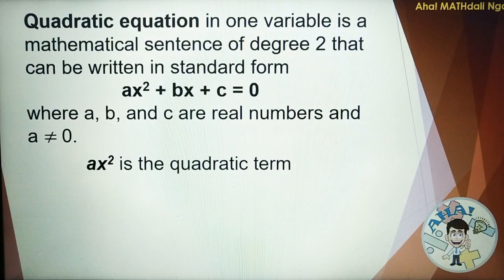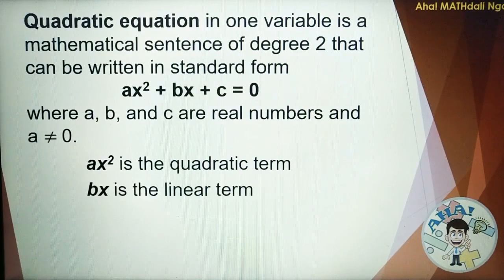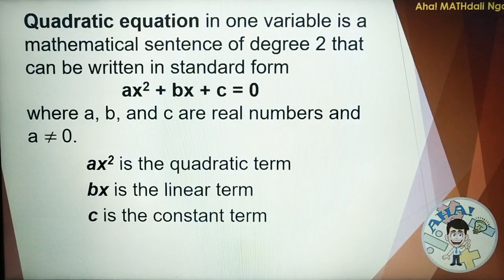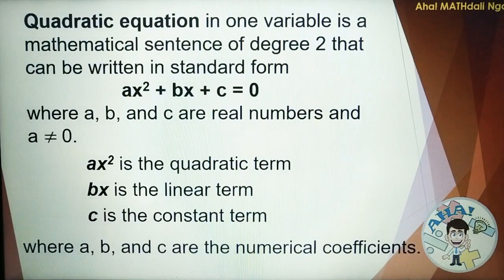AX squared is the quadratic term. BX is the linear term. And C is the constant term, where A, B, and C are the numerical coefficients.